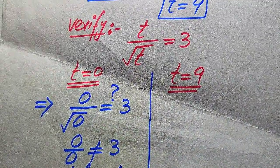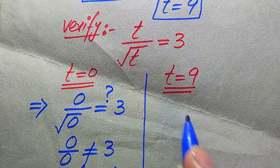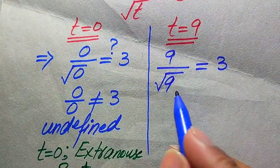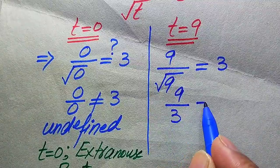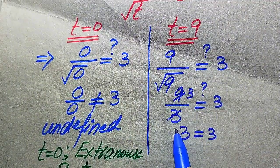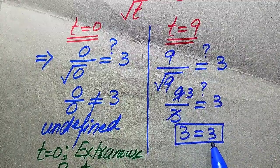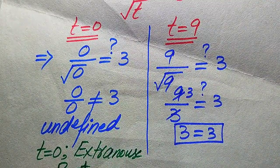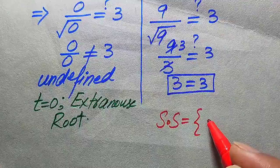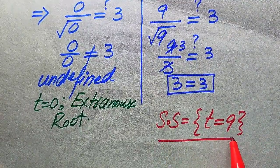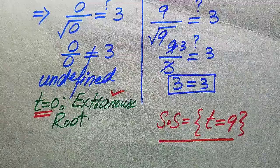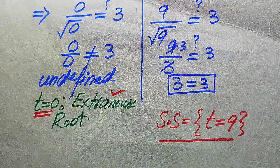For t equals 9, substituting gives 9 divided by square root of 9 equals 9 divided by 3 equals 3, which equals 3. Both sides are equal, so t equals 9 satisfies the given equation. The solution set for Method 1 is t equals 9, and t equals 0 is the extraneous root.